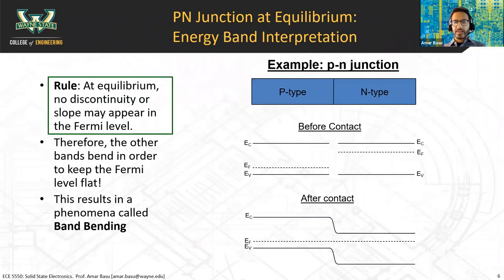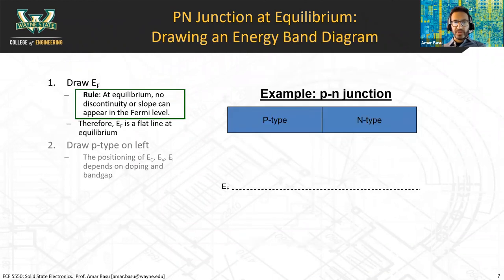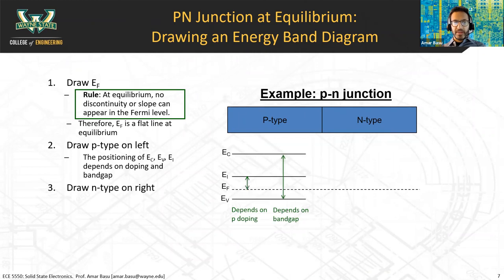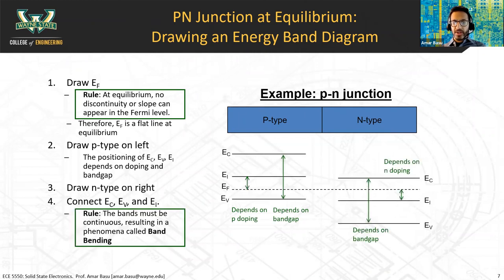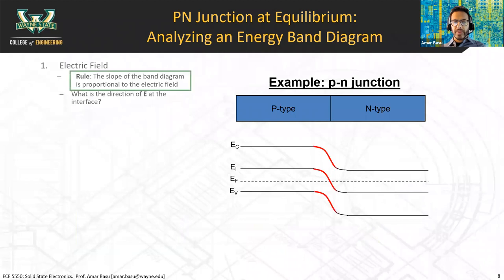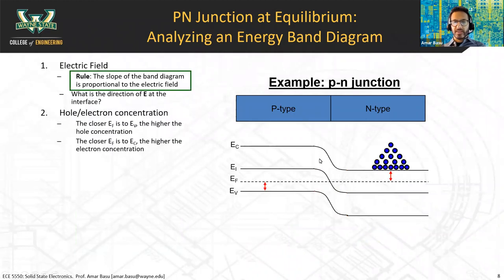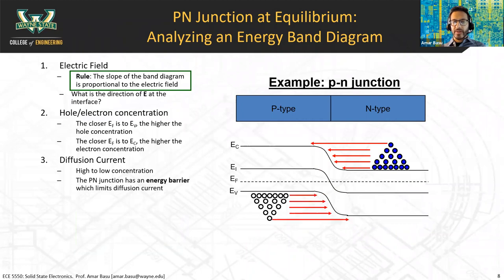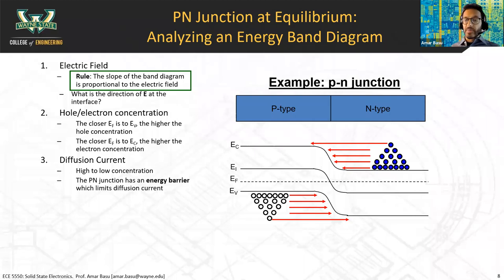We also talked about the energy band diagram model. I showed you a step-by-step way to draw the band diagram for a PN junction at equilibrium. We talked about band bending, how to find the built-in potential, and the fact that the slope in the band diagram represents an electric field. We talked about how you form an energy barrier that prevents the diffusion of electrons from N-type to P-type, and similarly prevents diffusion from P-type to N-type.